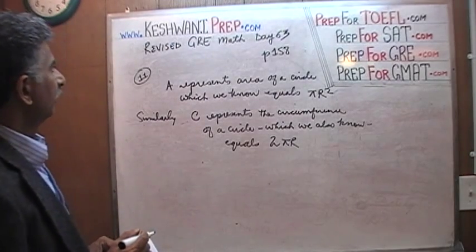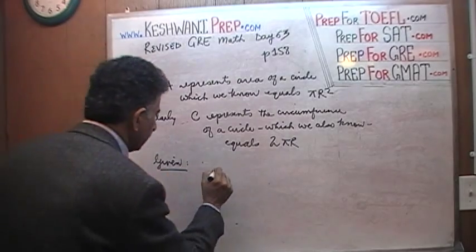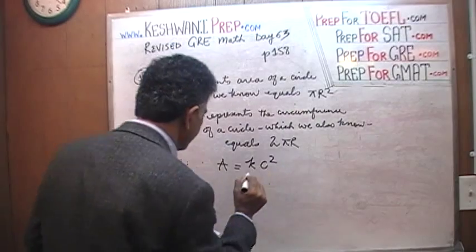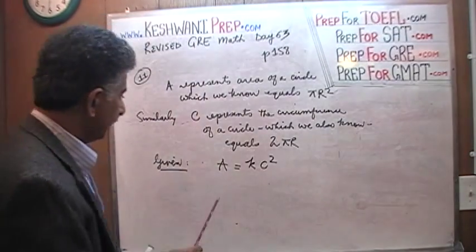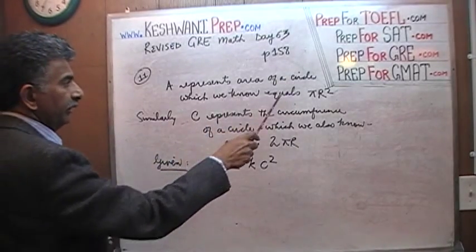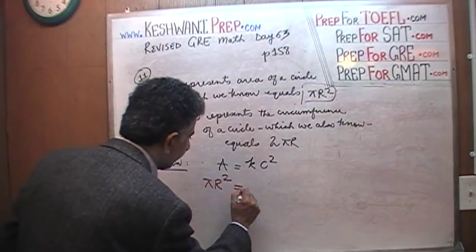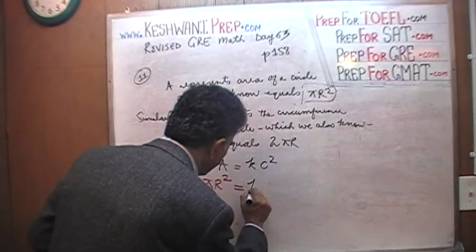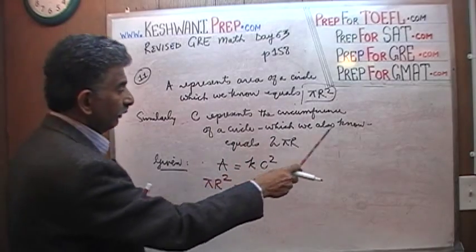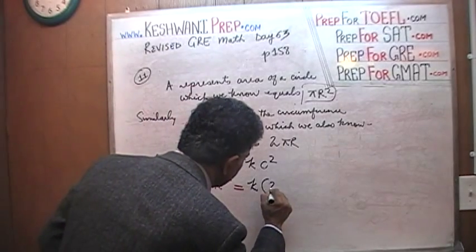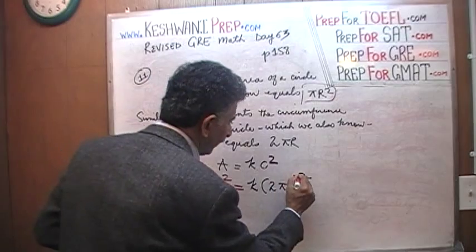And here is what is given to us: A equals k times C squared. We know A equals pi r squared, so I am going to replace A with pi r squared. Pi r squared equals k times C squared. And C we know equals 2 pi r, so we are going to replace C with 2 pi r — 2 times pi times r — and the whole thing is being squared. That is the important part: make sure you understand that C is being squared, so the outside has to be squared.